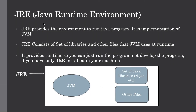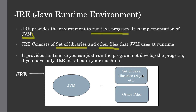The next is JRE. JRE stands for Java Runtime Environment. JRE provides the environment to run the Java program. It is the implementation of JVM — as discussed, JVM is responsible to execute code line by line, so JRE is the implementation of JVM. JRE consists of a set of libraries and other files that JVM uses at runtime.